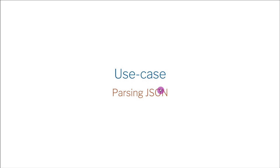Now I want to give you a use case of grammars. The use case I'm going to give you involves JSON. JSON is a file format that allows programs written in different programming languages to communicate. It was made famous because of JavaScript, and indeed it's actually a subset of the JavaScript language. It only includes dictionaries, lists, numbers, strings, possibly booleans, and null.